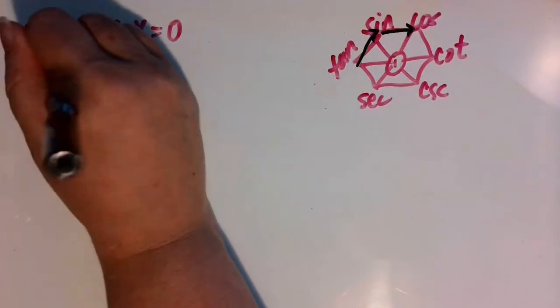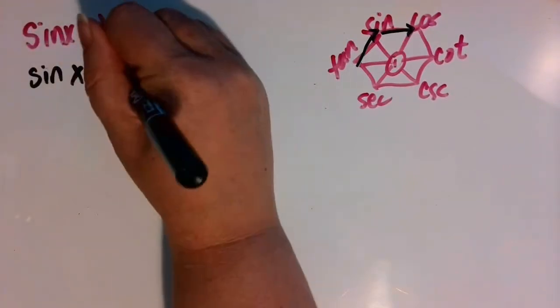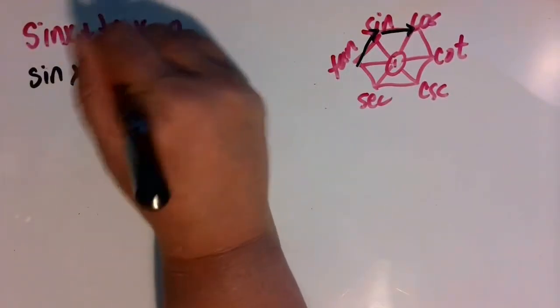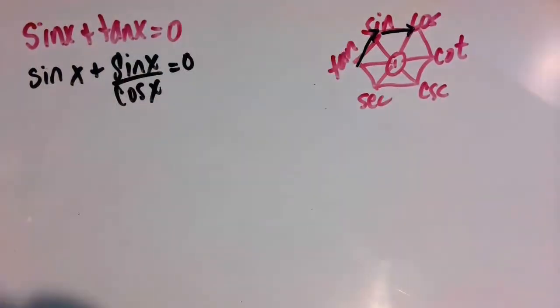So we'll start by changing that tangent into the sine of x divided by the cosine of x, and that's equal to zero.